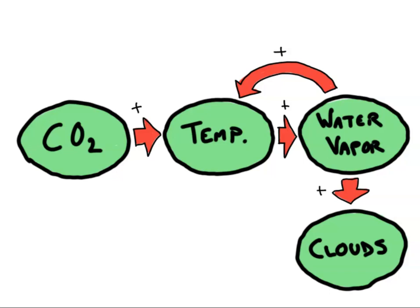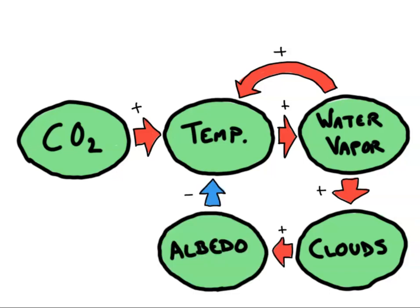And clouds have two contradictory feedbacks. Very small water droplets tend to scatter sunlight, increasing the Earth's albedo. This has a cooling effect. But larger water droplets tend to absorb long-wave radiation, enhancing the radiative forcing and warming the Earth. The balance between these two cloud feedbacks is an important area of research for climate scientists.